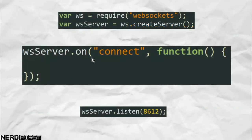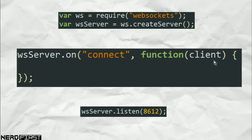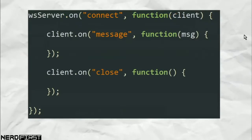The first event we need to listen to is 'connection', which happens when a client connects to our server. When there is a connection, we want to run this function — that's what this syntax means. One thing is passed to this function, and that is a handle to the client itself. This is important because in order to handle this event properly we need to be able to access the client that has just connected. There are really only two things this client can do that we need to handle: firstly, if it sends us a message, and when the connection is actually closed.